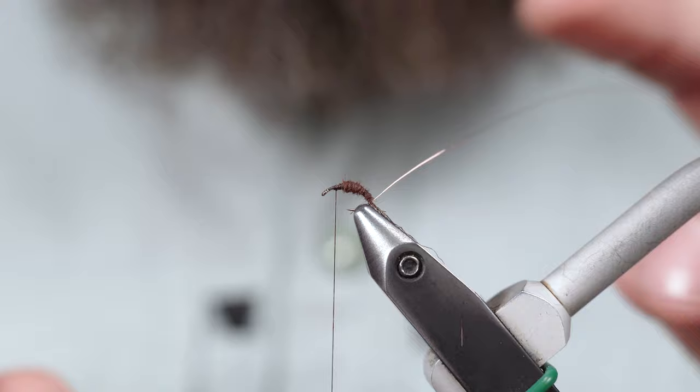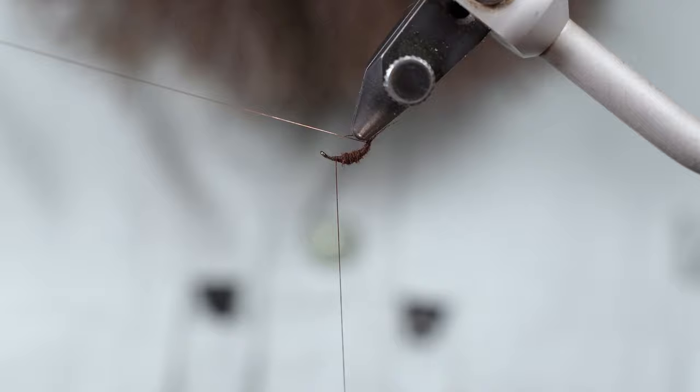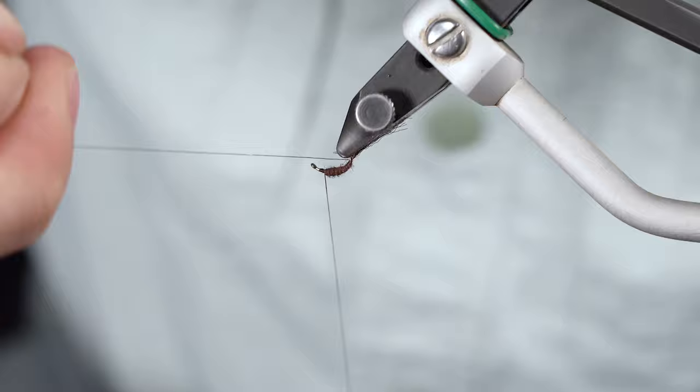And all I'm doing with my rotary function is just turning the vise so I can rib this fly a little faster.